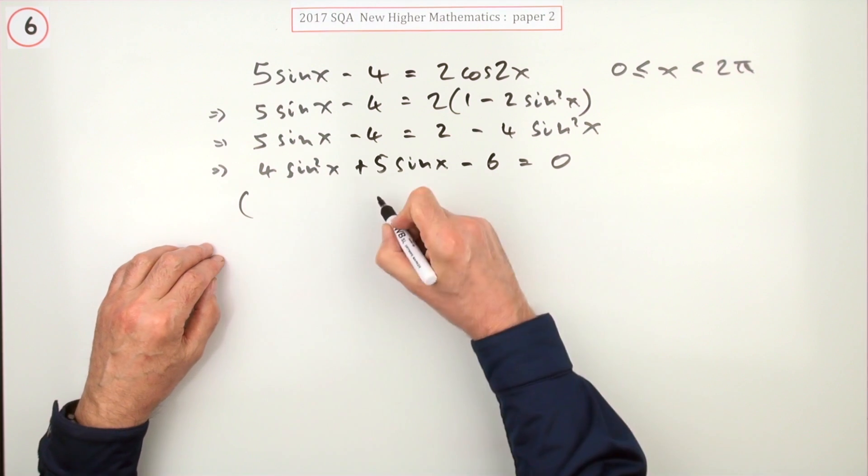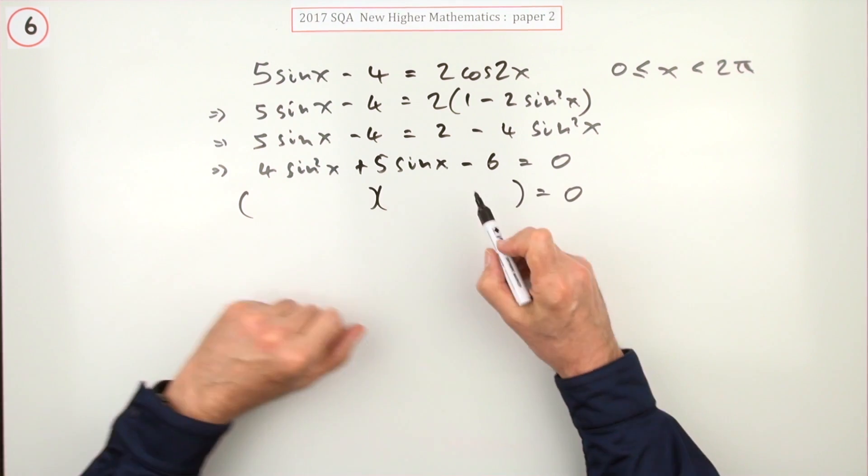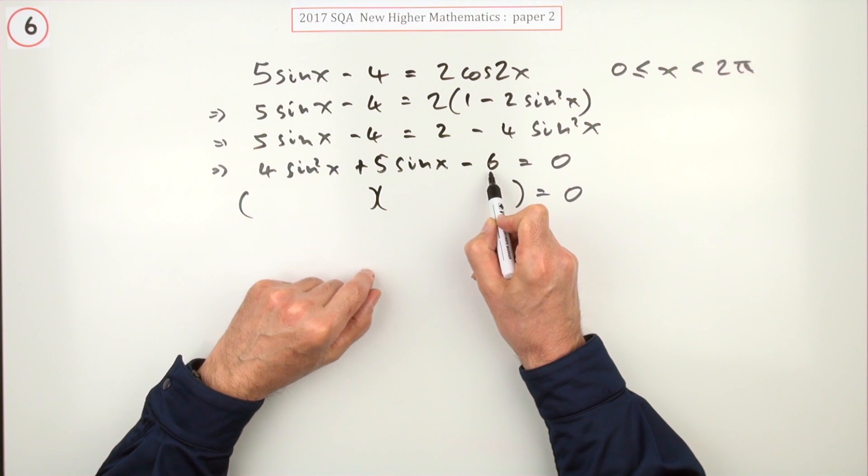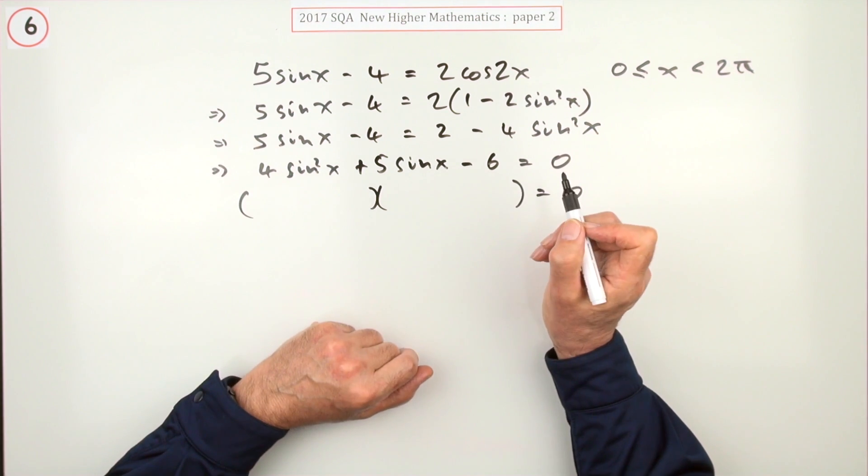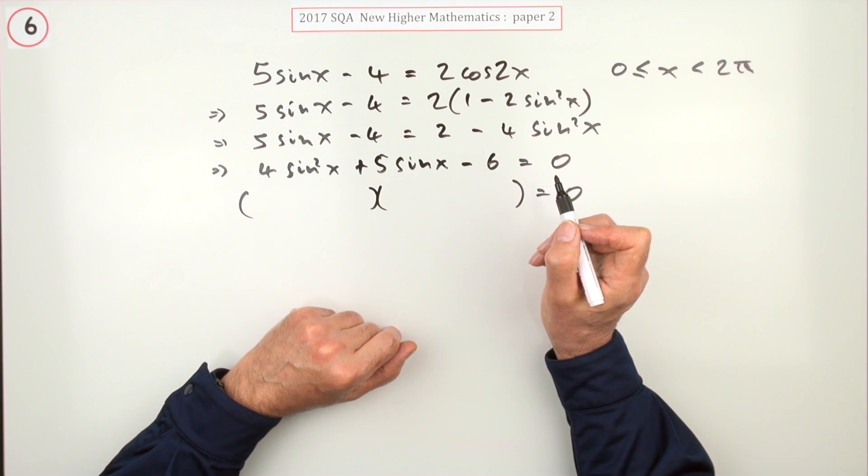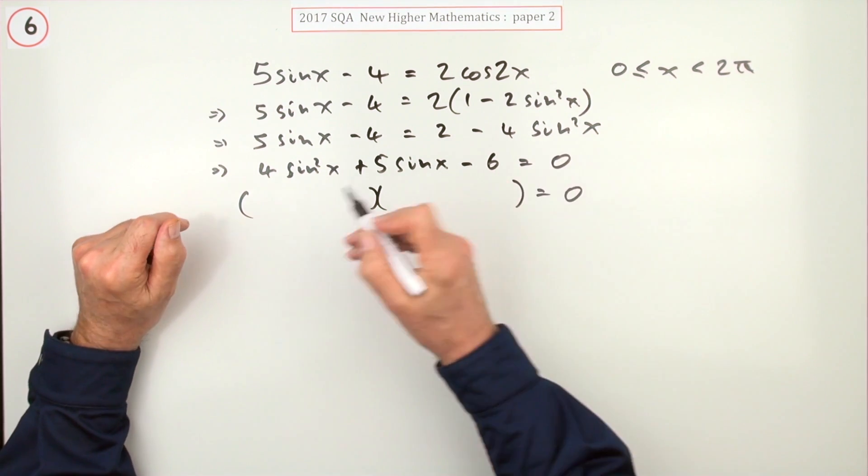Right, hopefully it'll factorize. Then what we've got: multiply to give six after being multiplied by something here to have a difference of five. It's either four and one, or two and two. For twos are eight.